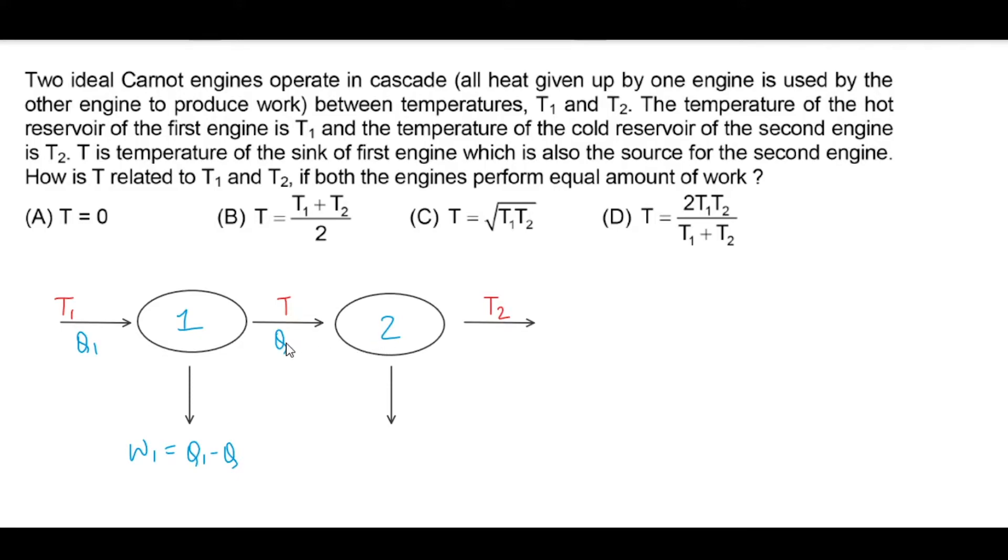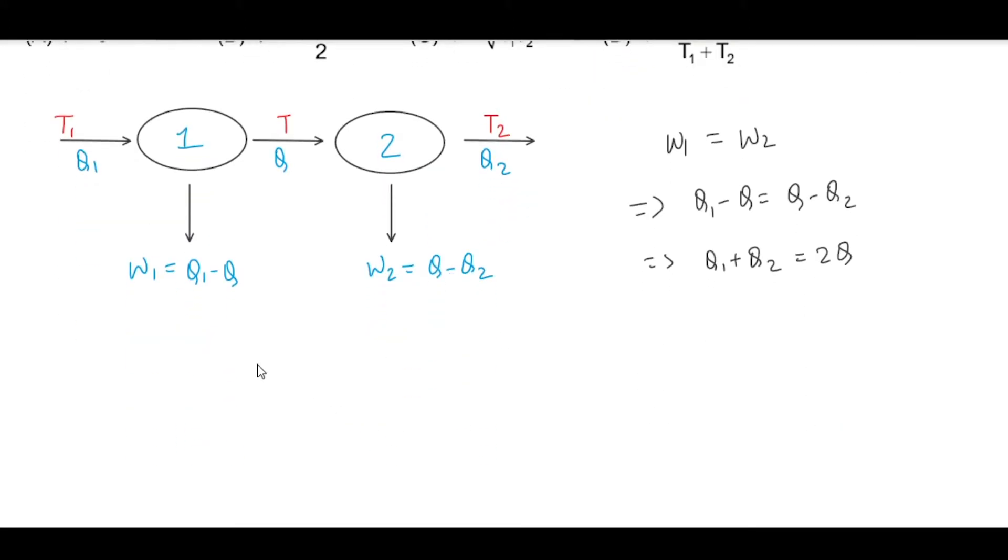Second engine: Q heat is supplied and let's assume Q2 heat is supplied to the sink. So work W2 will be Q minus Q2. The question states that both engines perform equal amount of work, meaning W1 is equal to W2. We can substitute these values: Q1 minus Q is equal to Q minus Q2, so Q1 plus Q2 is equal to 2Q.